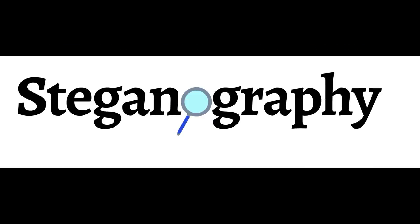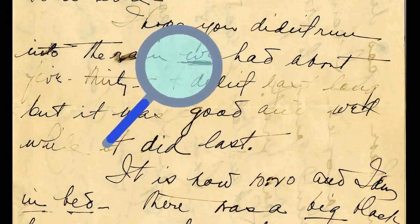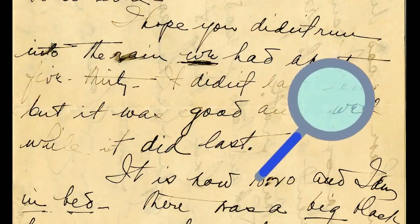Steganography means hiding a secret message within another message. The combined message appears to be ordinary, so a casual observer wouldn't even know that something has been concealed.